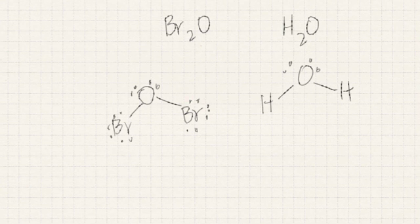So let's see, bromine has one, two, three, four, five, six, seven valence electrons here, seven valence electrons here.